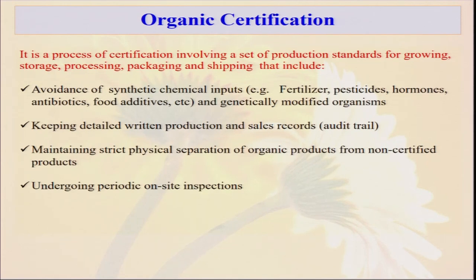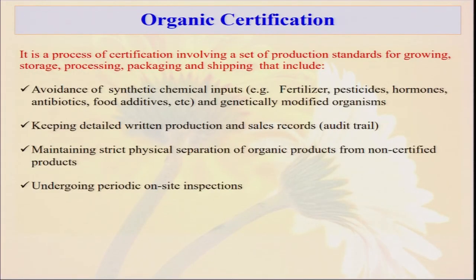You have to maintain strict physical separation of organic products from non-certified products. Suppose part of your farm is organic and one or two hectares are grown conventionally — there should be a physical barrier with no chance of mixing. Undergoing periodic inspection is required; it will not be just one time. Different periodic inspections will be done by accredited agencies before you get certification.